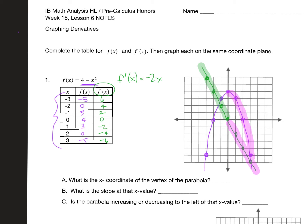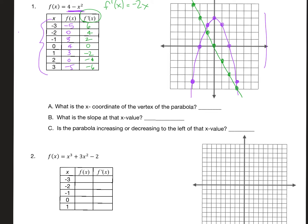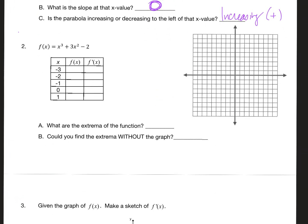So let's go ahead and answer these questions. What is the x-coordinate of the vertex of the parabola? Looking at the graph, that point is at x = 0. What is the slope at that x-value? It's also zero. Is the parabola increasing or decreasing to the left? Over here it is increasing, which you can also see in the derivative — those slopes are positive.